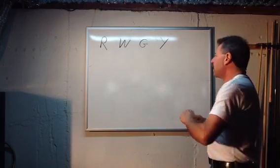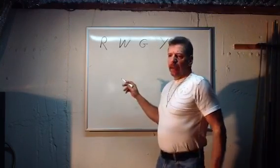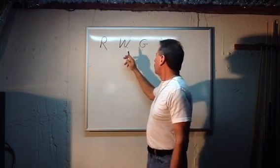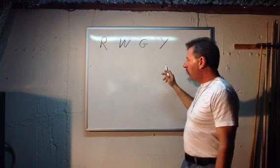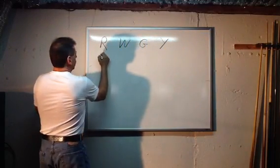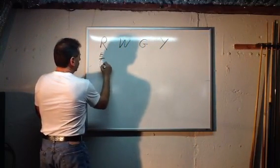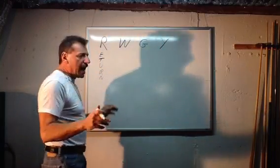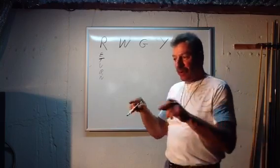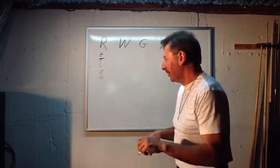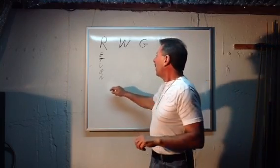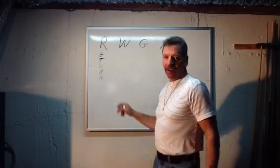The basic thermostat has four letters on the back: R, W, G, and Y. The R is simply the return line, or half of the transformer line. The transformer has two lines coming out of it down by the boiler room, with two screws that give 24 volts out. One of the lines goes to the R, or the hot line, or the return line on the thermostat.